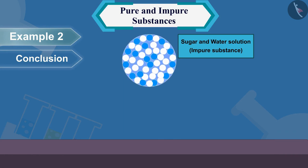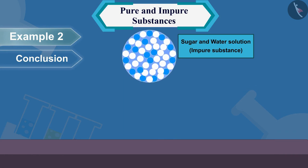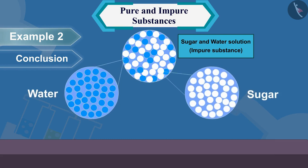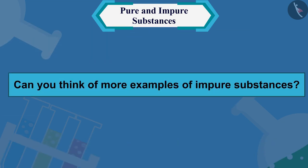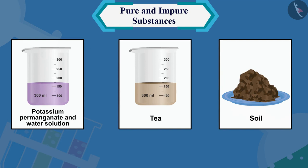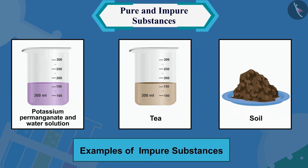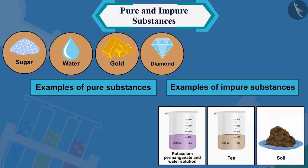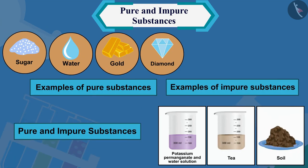But can we separate sugar or water into their components by some physical process? No. From this activity we can conclude that the solution of sugar and water is an impure substance or mixture, which consists of two pure substances — sugar and water. More examples of impure substances include potassium permanganate and water solution, tea, and soil. These are made up of two or more pure ingredients.